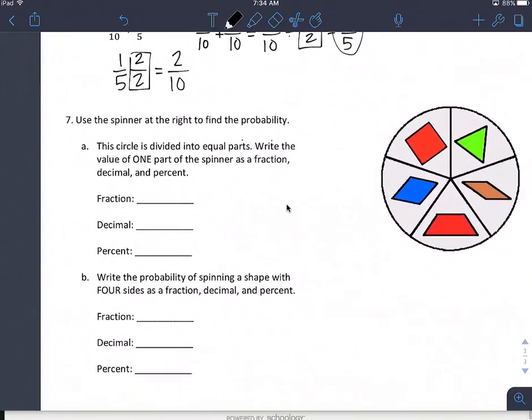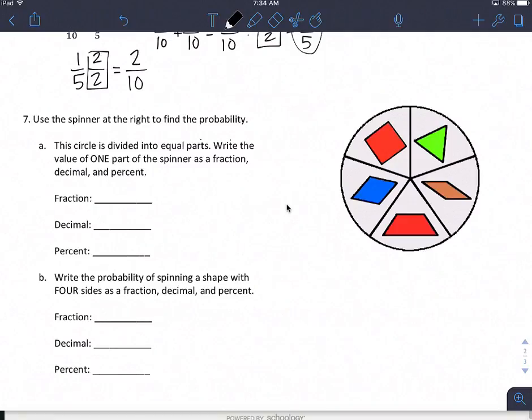Last one. The circle is divided into equal parts. We write the value of 1 of the parts of the spinner as a fraction, decimal, percent. Well I have 5 parts total, so 1 of those would be 1 fifth. I'm going to use my giant 1 to get the value of 100. 5 times 20 is 100, 1 times 20 is 20. My decimal is 0.2, and my percent is 20%.